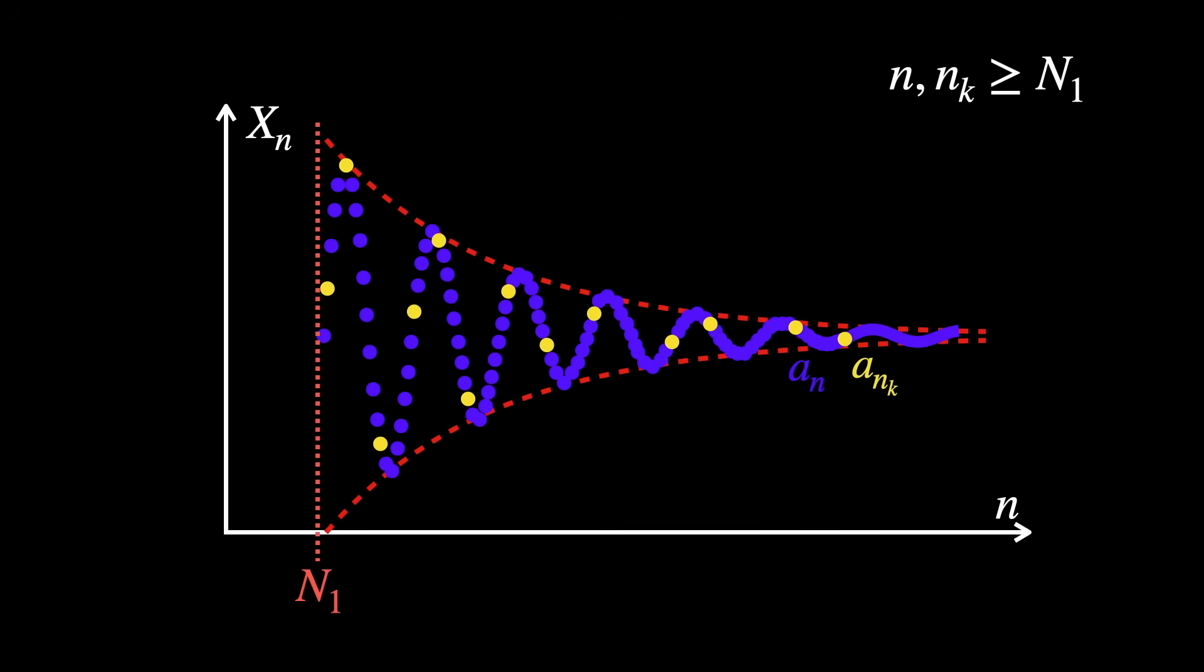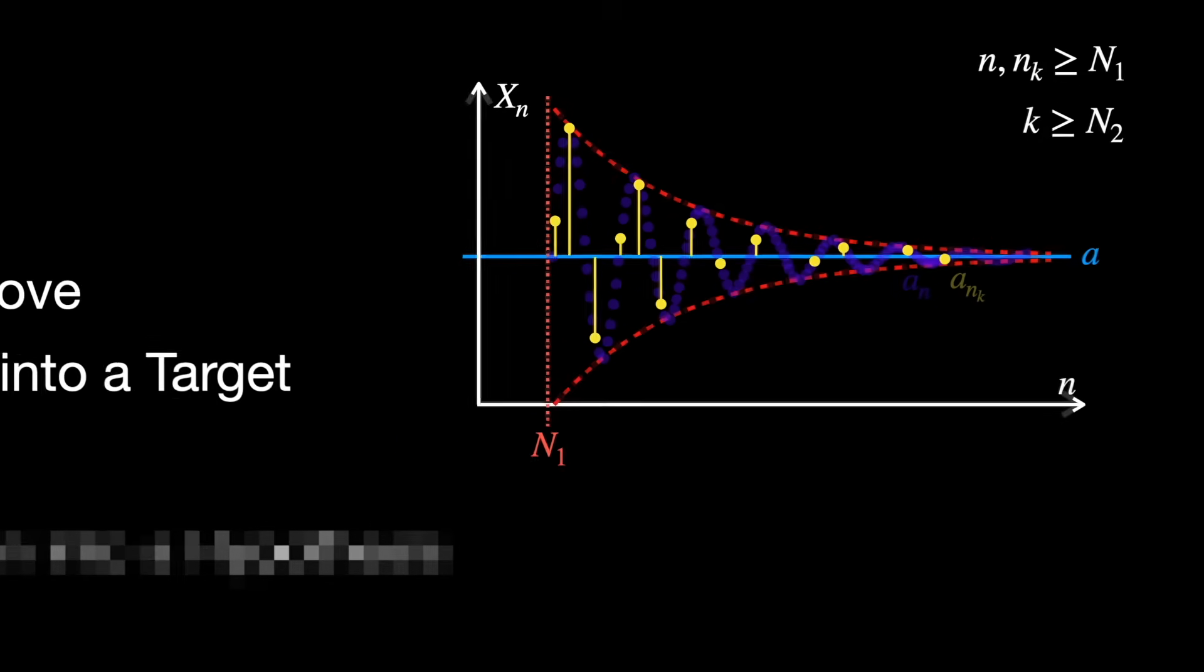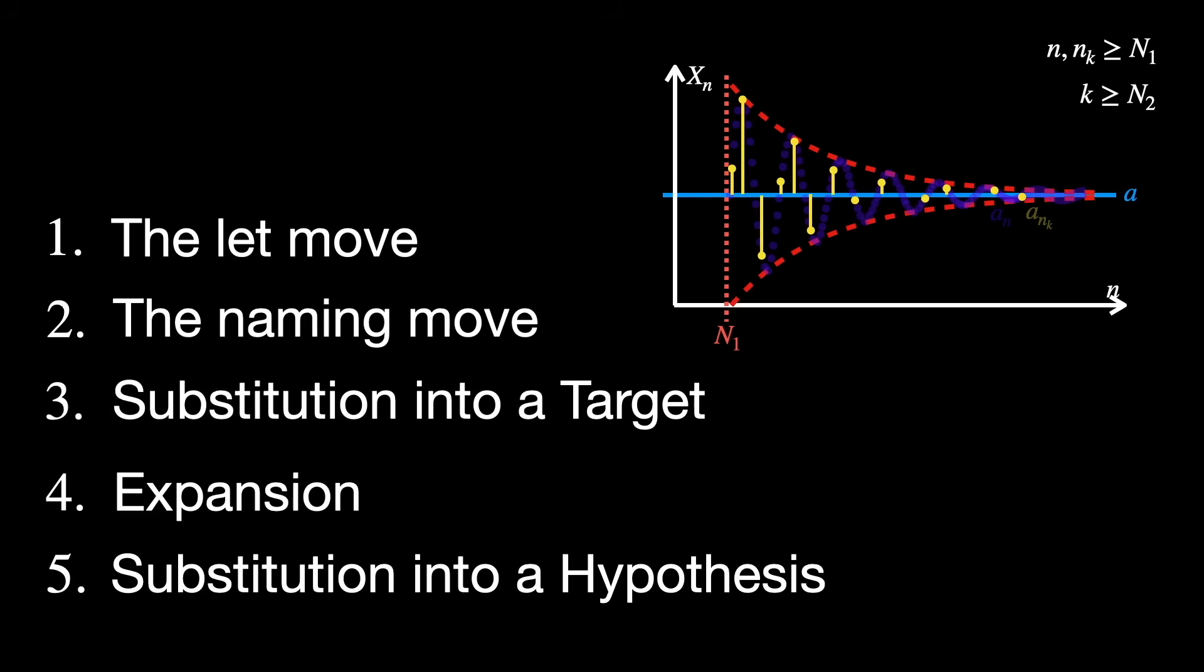Specifically, greater than or equal to n1. The fact that the subsequence converges to a guarantees that a sub n sub k is close to a. Again, as long as k is large enough. Specifically, k must be greater than or equal to n2. This move is known as substitution into a hypothesis.